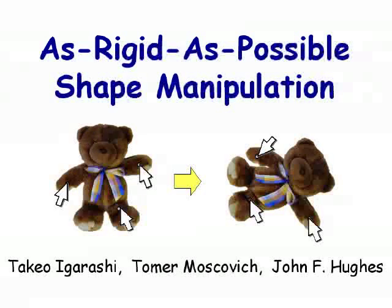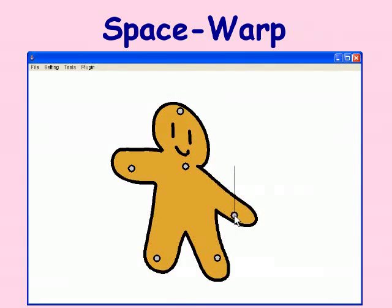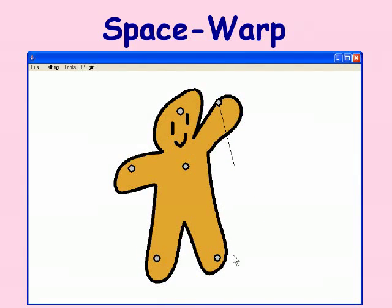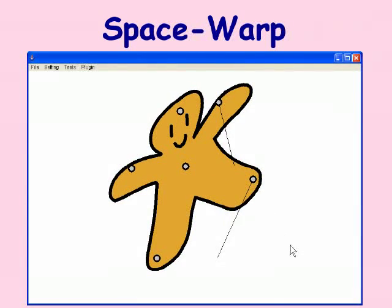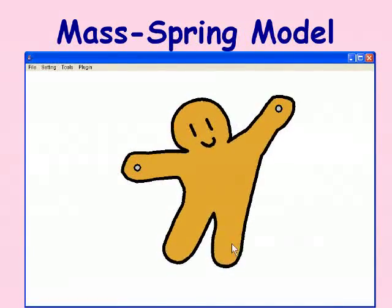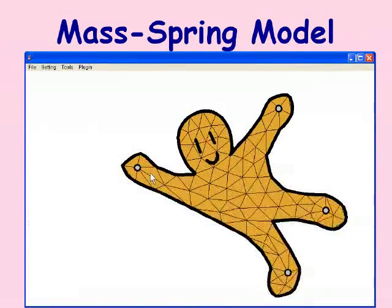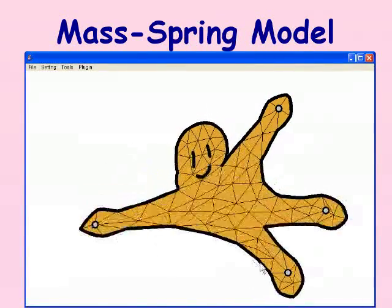We present a system for interactive manipulation of two-dimensional shapes. A typical approach to shape deformation is to deform the space in which a shape is embedded, but it is often difficult to preserve the original shape. Mass spring models attempt to maintain the original shape, but they are too slow to produce a responsive motion and may become unstable.